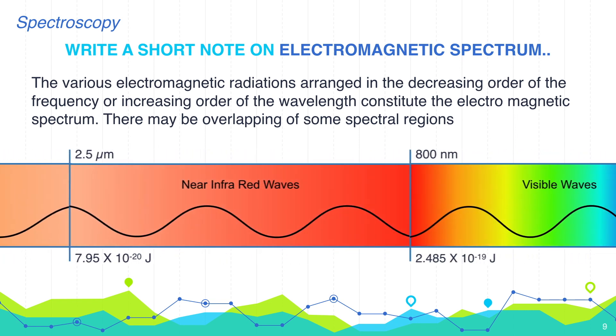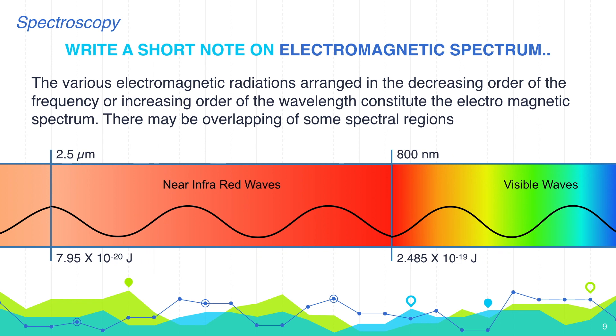The part of the infrared radiation close to visible range is called near infrared. This range is from 2.5 micrometer to 800 nanometer. The complete infrared region is used in IR spectroscopy because different electronic transitions depending upon the bond energy show peaks at different IR bands.